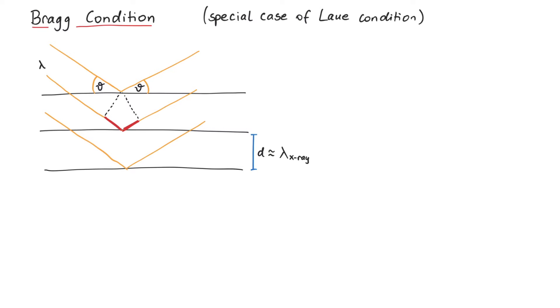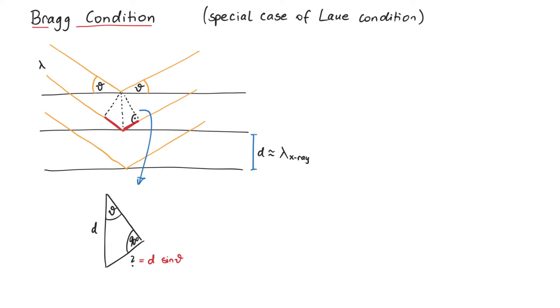What exactly is this additional path length? Well, if we call the distance between crystal layers d, then we can draw a right-angled triangle here, which means that this additional path length is given by 2 times d times the sine of theta.